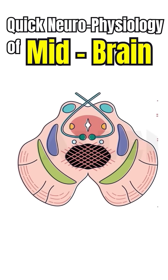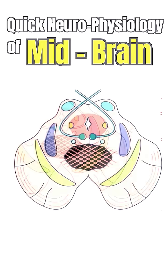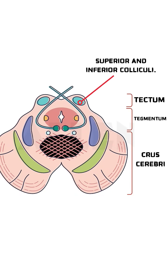Let's break down the neurophysiology of the midbrain. The midbrain can be understood in three sections: the tectum, the tegmentum, and the crus cerebri.